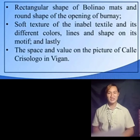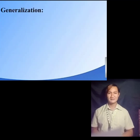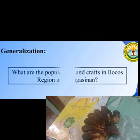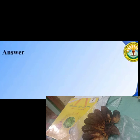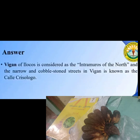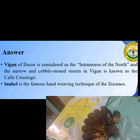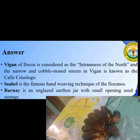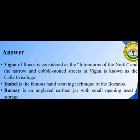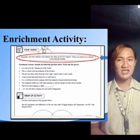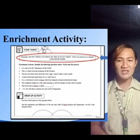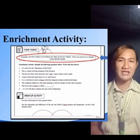To sum up our lesson, provide a brief answer to the questions below. What are the popular arts and crafts in Ilocos region and Pangasinan? Vigan, considered as the Intramuros of the north, retains the Spanish colonial architecture along its narrow and cobblestone streets known as Calle Crisologo. Inabel is a hand-weaving technique of the Ilocanos. Burnay is an unglazed earthen jar with a small opening used for storage. Turn your activity sheets to the enrichment part and answer the questions in your activity sheet in Art 7.